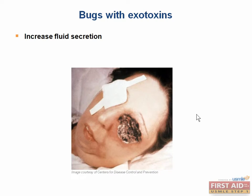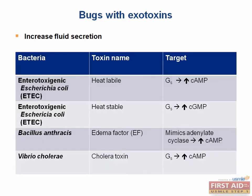This image shows a Bacillus anthracis infection of the left eye. The Bacillus anthracis toxin has two subunits: edema factor and lethal factor. Necrotic tissue is caused by lethal factor, and swelling around the eye is caused by edema factor. Edema factor acts to increase cyclic AMP levels, similar to cholera and E. coli labile toxins. However, this toxin is unique in that it has enzymatic activity and can continuously produce cyclic AMP without being activated by a G protein.